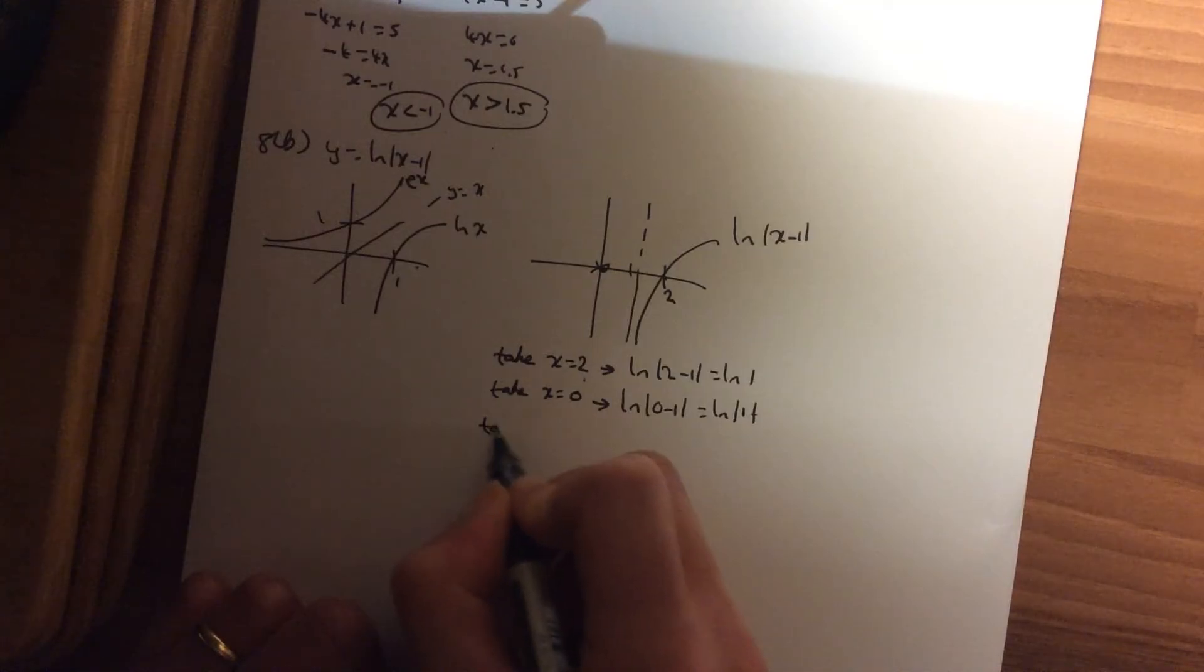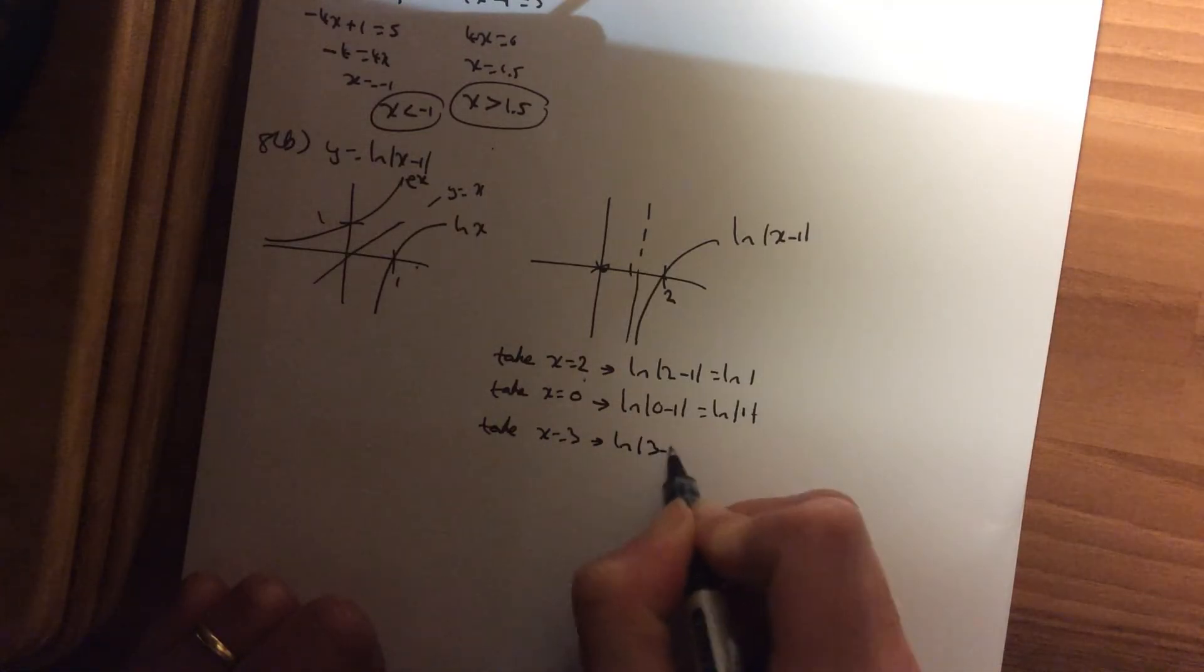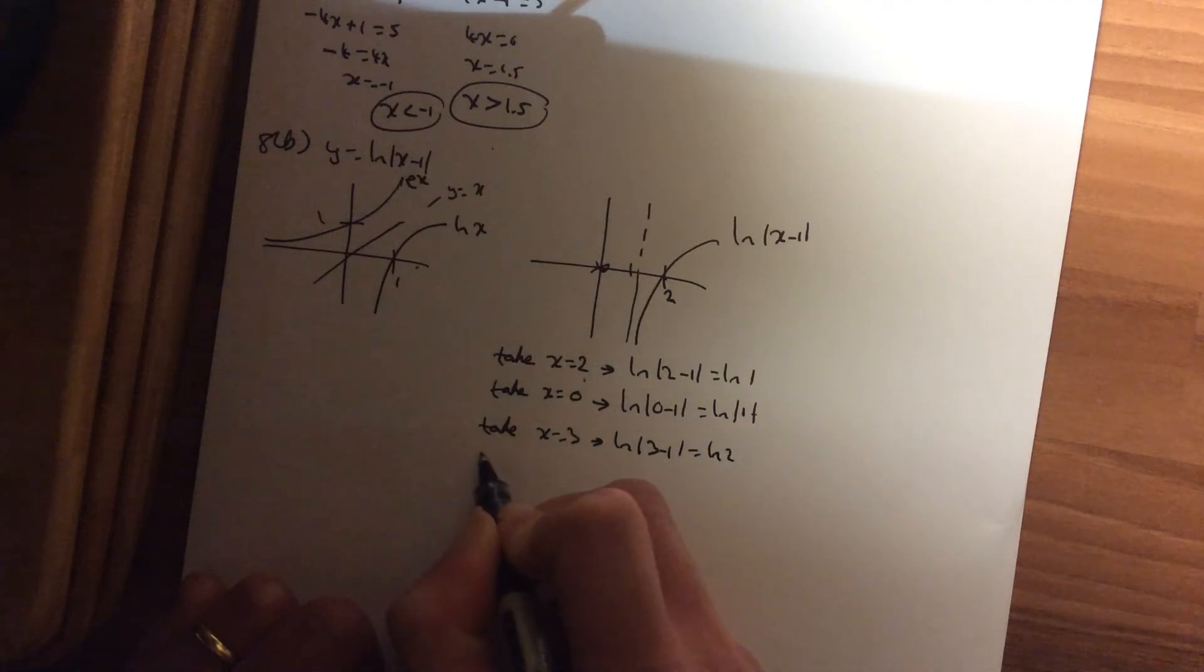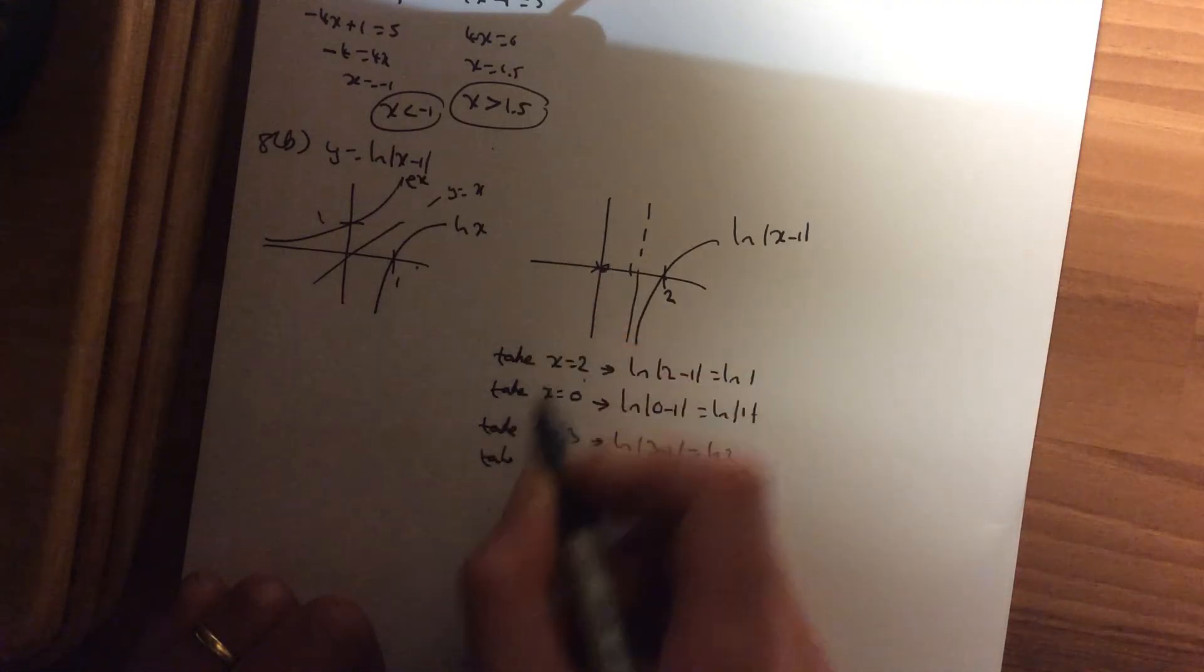I am going to try a different one. Let's say x is 3. So log(3 - 1), which is log 2. And let's say, let's keep working down this side, x is -1.